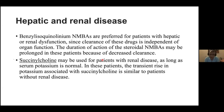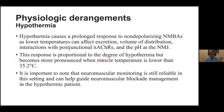Succinylcholine may be used in patients with renal disease as long as there is no hyperkalemia. Hypothermia causes prolonged response to non-depolarizing muscle relaxants, as lower temperatures affect excretion, volume of distribution, interaction with post-junctional receptors, and pH at the neuromuscular junction. The response is usually seen when temperature falls below 35°C. Monitoring is always necessary in hypothermic patients, who require less aminosteroid.